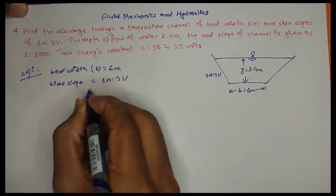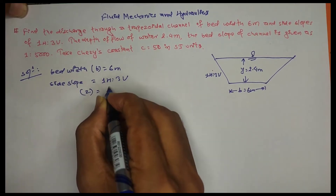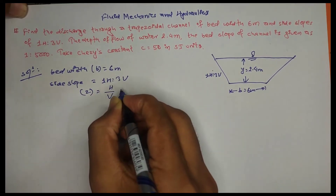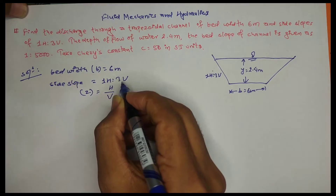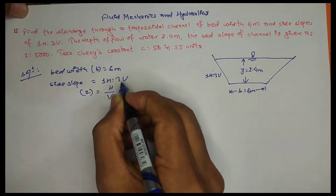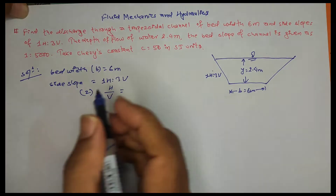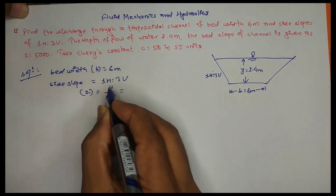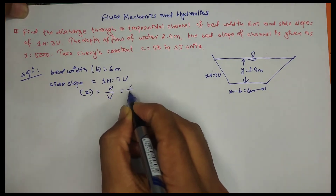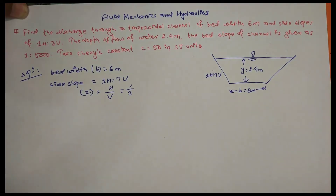If we take the side slope value of z, we take horizontal by vertical. If we take the vertical, we take vertical by 1. If we take horizontal by vertical by 1, we take vertical by z — this defines the slope ratio z.